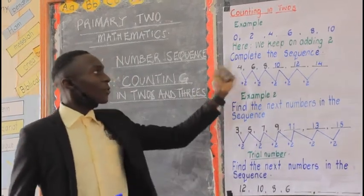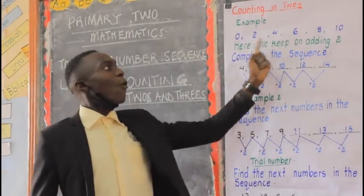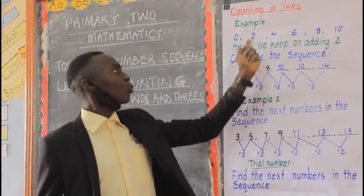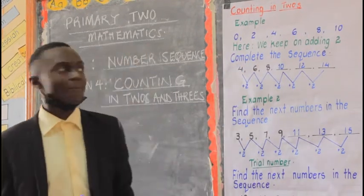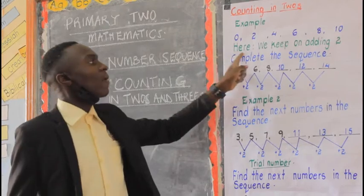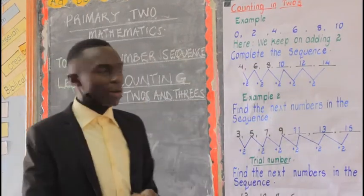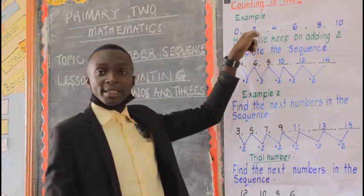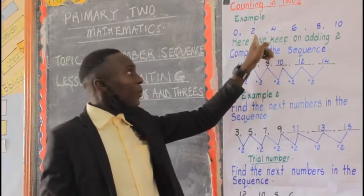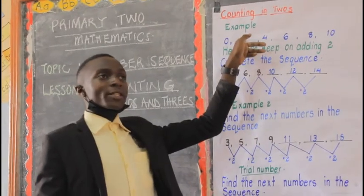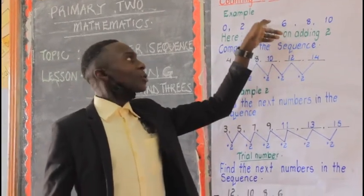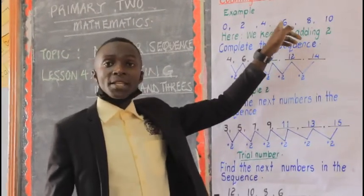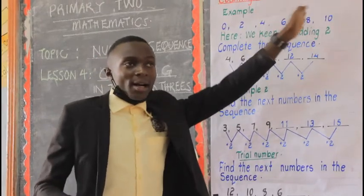Example one: zero, two, four, six, eight, ten. Here we go on skipping two numbers. We keep on adding two because when you have zero and add two, you automatically get two. When you add two to this two, you get four. When you add two to four, you get six. When you add two to six, you get eight, and many others.